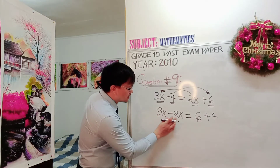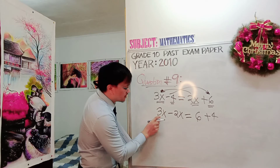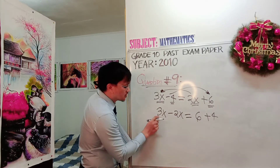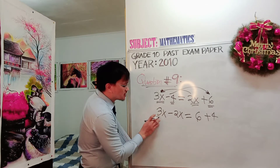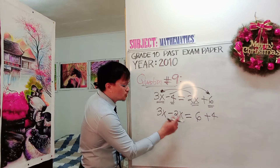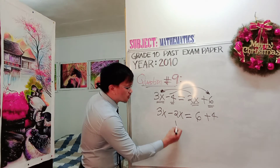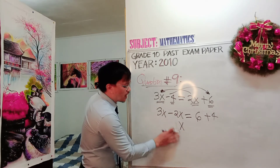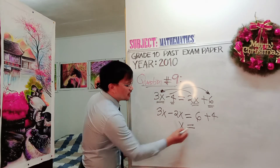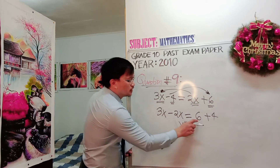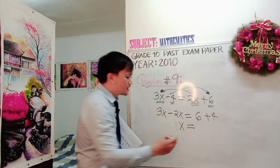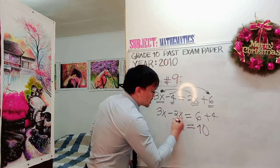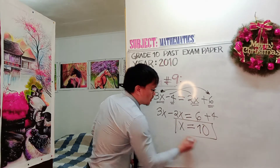So this is 3X minus 2X. Since they are like terms, 3 minus 2 equals 1, so we have 1X, which equals 6 plus 4, which is 10.